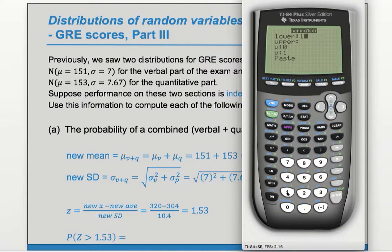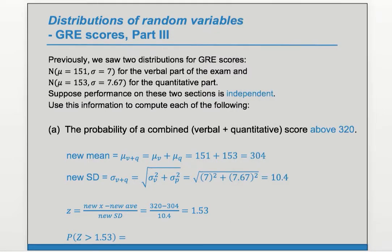Our lower bound wants to be 1.53. We need a large upper bound, maybe 6 should be good enough, and we'll get 0.063. So that will be our final answer for this part.